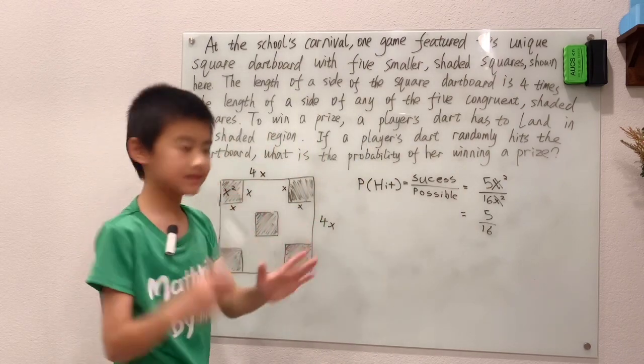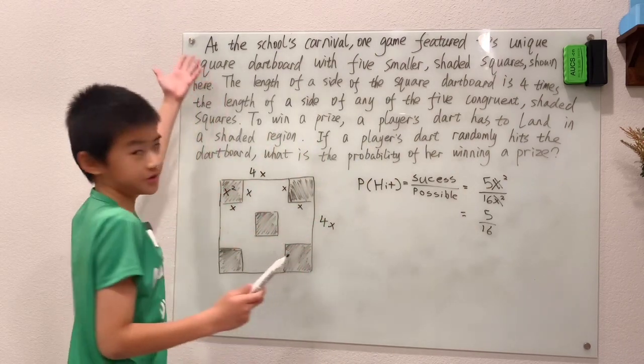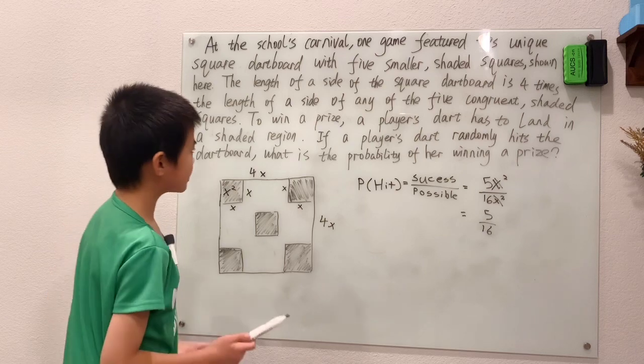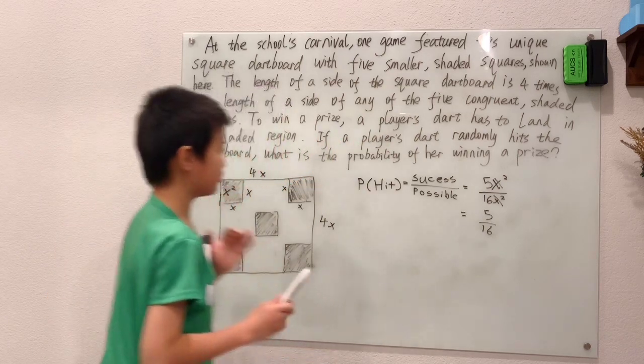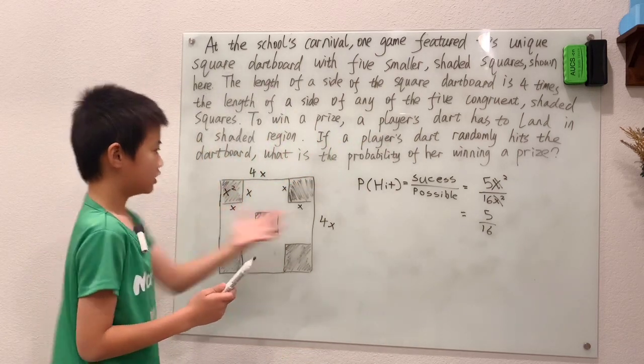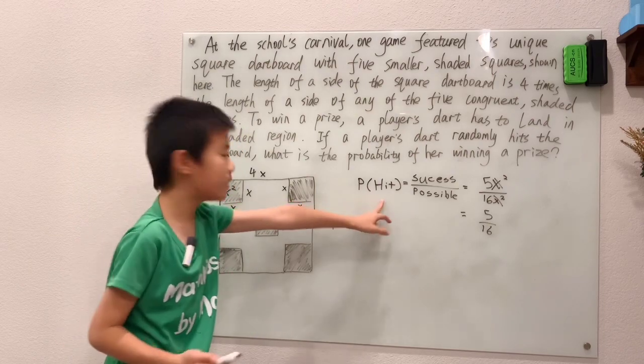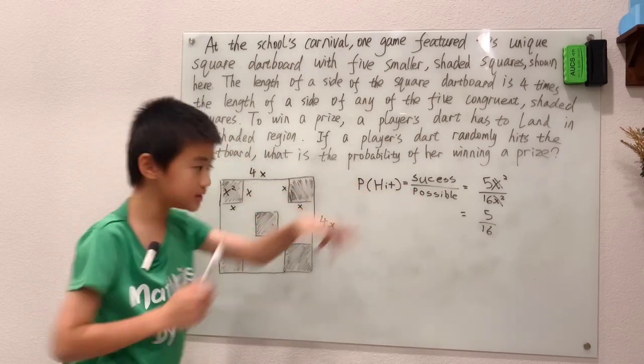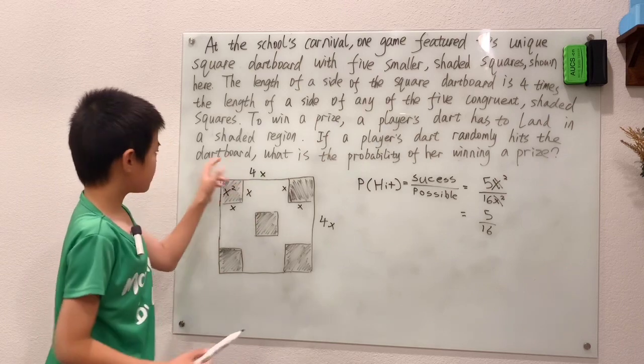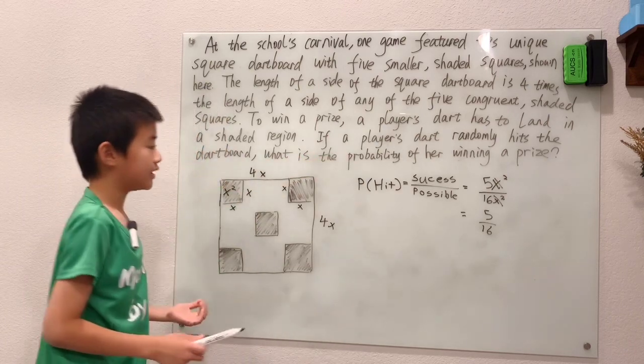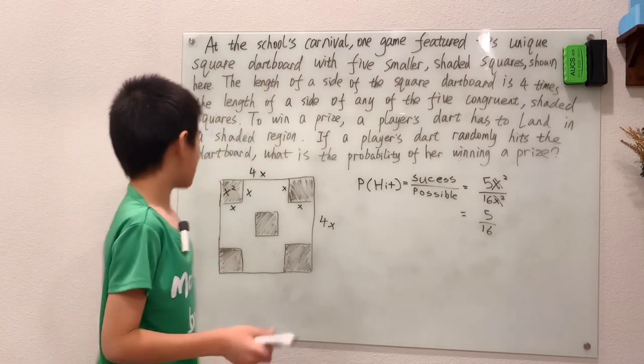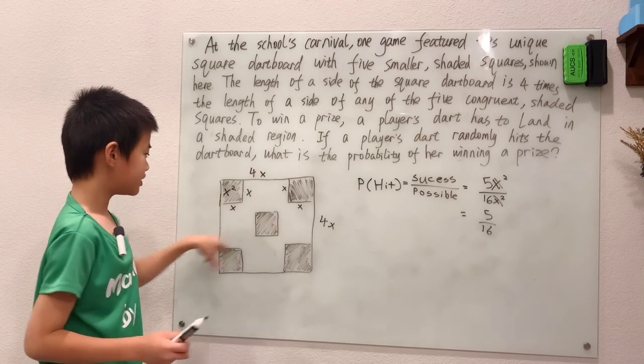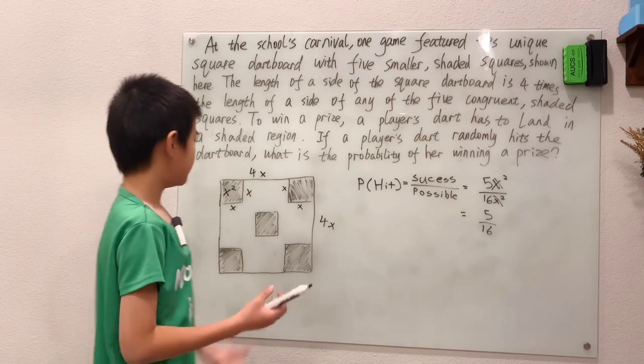Read the problem again. Key step at the end of a word problem, especially a long word problem like this. The player's dart randomly hits the dartboard. That's what probability means, we're randomly selecting something out of another group. What is the probability of her winning a prize? Winning a prize is just the dart lands in one of these shaded regions. And we can use geometric probability to figure that out.